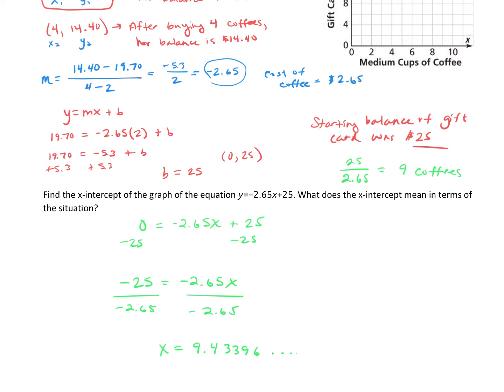So what does that mean? What that means is when the y value is zero, when there is no money left on the card, x, the number of coffees she can buy, is 9.43396. We know that that's not a realistic number of coffees to buy, so again we're finding she can buy nine coffees with that $25 gift card. And that x-intercept at 9.43396, when the y value is zero, that's when all the money on the card has been spent.